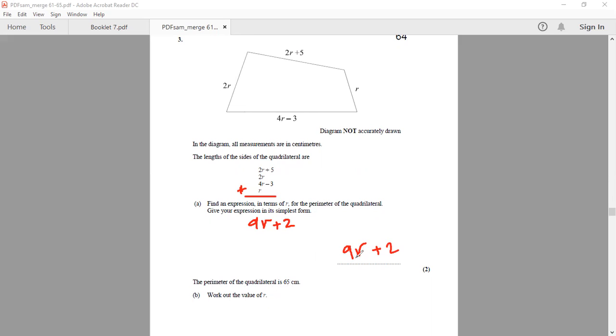Again, we can use the fact that the perimeter in algebraic expression is 9R plus 2. And the actual perimeter is given as 65 centimeters. So we're going to form the equation first by writing 9R plus 2 equals 65. And we can solve this equation by doing the inverse operation. Inverse of adding 2 will be taking away 2, which will give me 63. And then opposite of multiplying by 9 will be dividing by 9. So I'm going to get 7. So the value of R must be 7 centimeters.